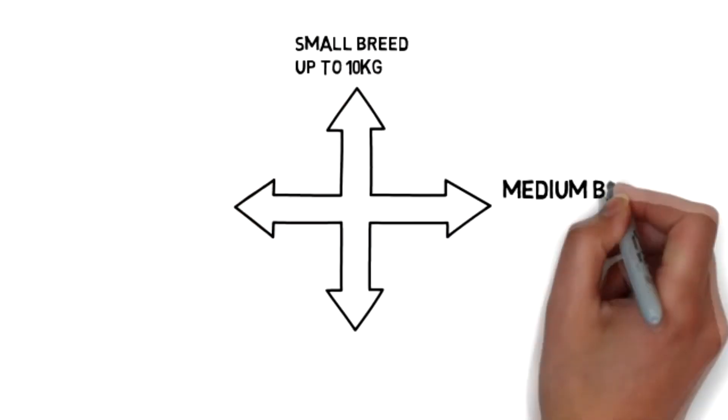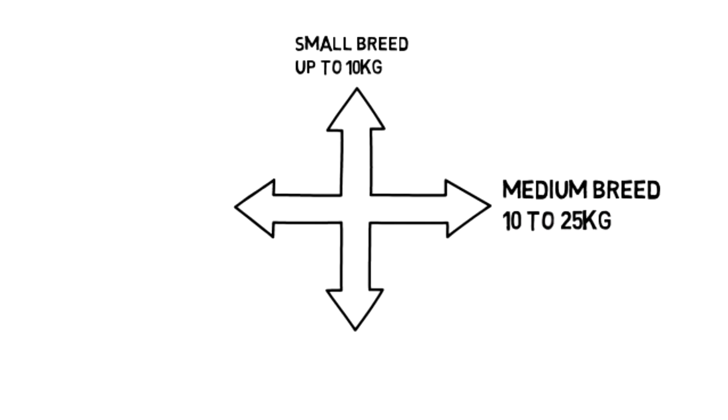There are four subscription levels available: small breed for dogs up to 10kg, medium breed for one dog between 10 and 25kg or for multiple smaller dogs with a combined weight of up to 25kg.